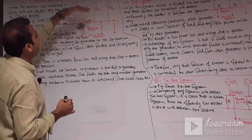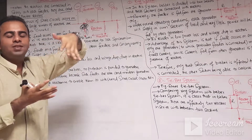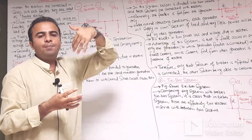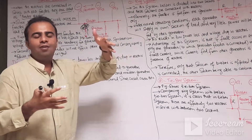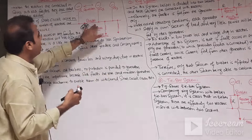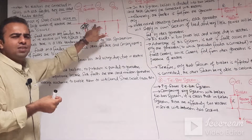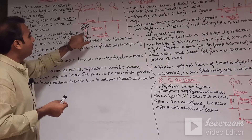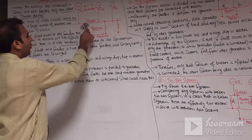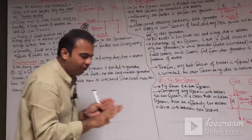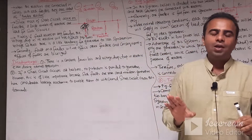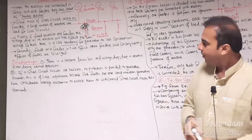Since the bus bar voltage is not affected, generators G1, G2, and G3 supplying that bus bar will not lose synchronism. Synchronization is the process where parallel generators connected with the bus bar must have the same voltage, same frequency, and same phase sequence. Because the reactor connected in series with the feeder limits the short circuit current, the bus bar voltage is not affected and the generators will not lose their synchronism.